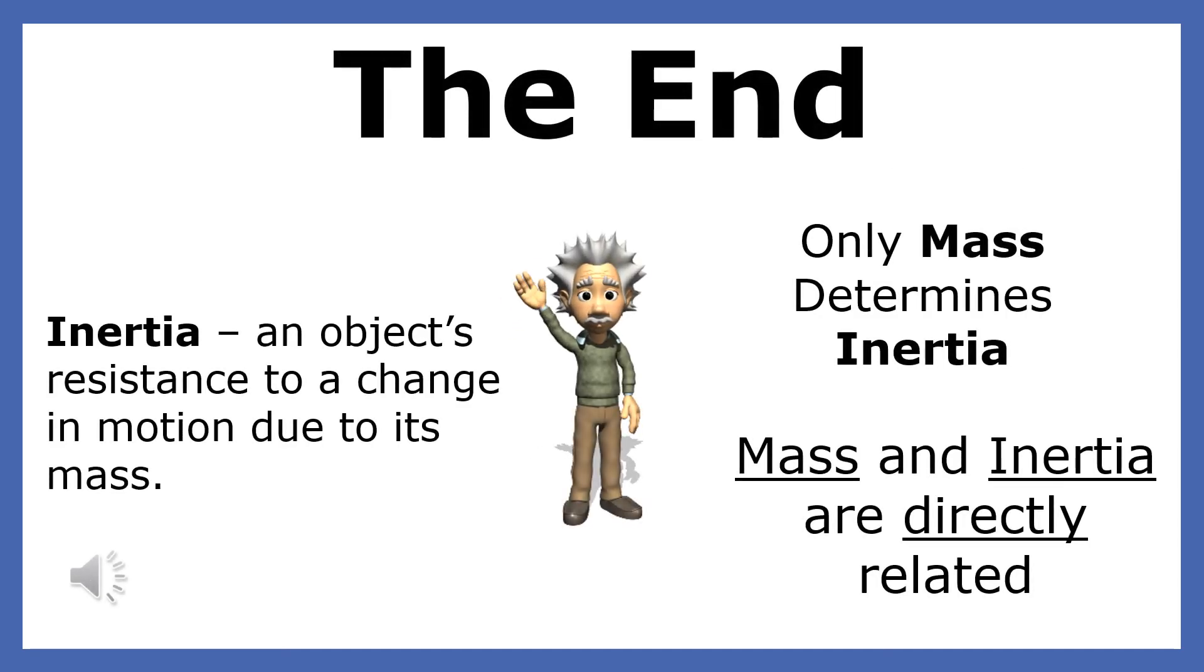Let me summarize the key points of this presentation. Inertia is an object's resistance to a change in motion due to its mass. Only mass determines inertia, and mass and inertia are directly related.